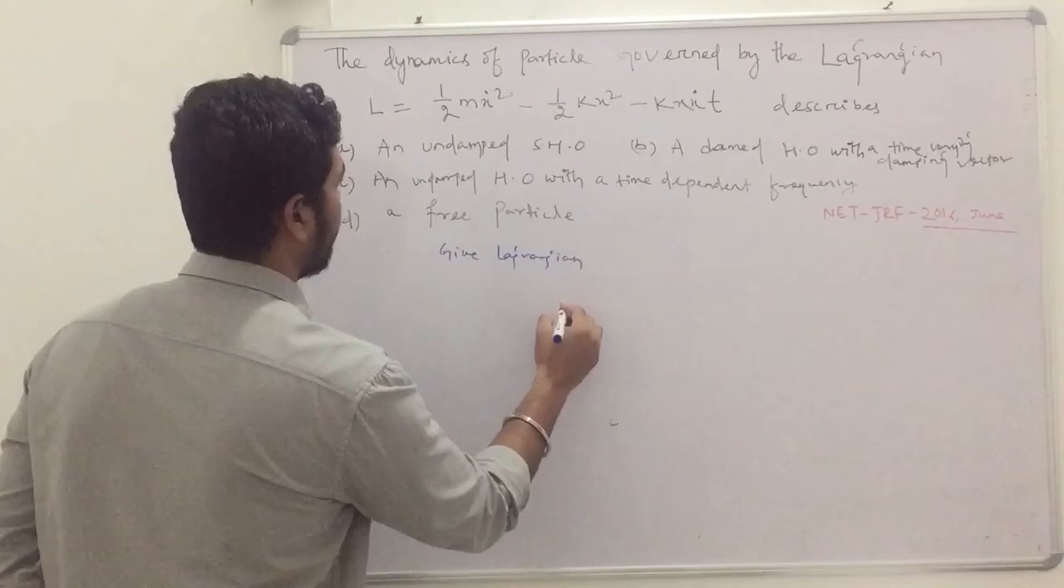So, to do that your given Lagrangian is L equals to half mx dot square minus half kx square minus kxx dot t. This obviously one generalized coordinate that is x and it depends upon, it is obviously a one dimensional system you can say. So, depending upon one generalized coordinate. So, to get the Lagrangian equation of motion of this given Lagrangian you have to apply formula d upon dt upon del L upon del x dot minus delta L upon del x equals to 0.